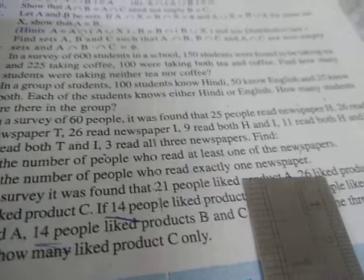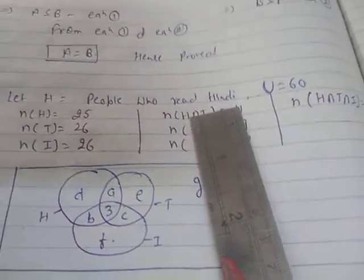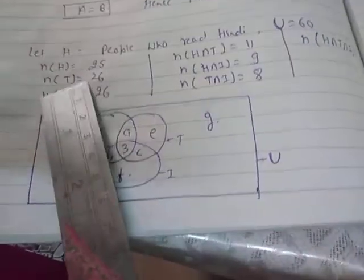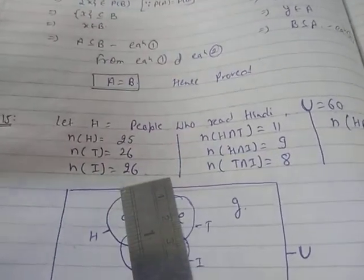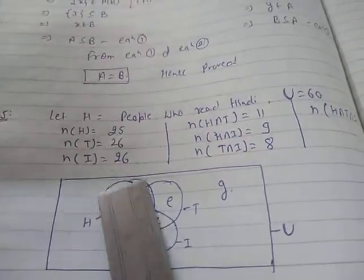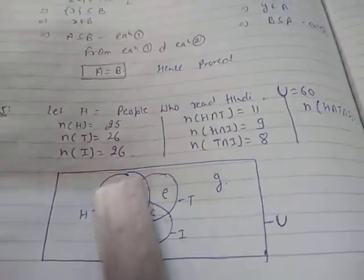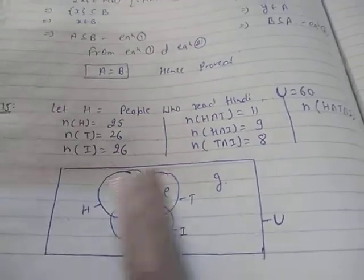I explained the formula earlier — you can use the formula or a Venn diagram. Here I am going to explain it with a Venn diagram. Let H, T, and I be the three sets. The number of H is 25, number of T is 26, number of I is 26. Three sets means three circles, and since all three intersect, the three-way intersection part is given.